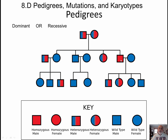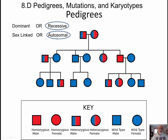So let's talk about it. Is this a dominant or recessive one? Do we all get it, or just some? This is a recessive. Is it a sex-linked one or autosomal? Looks like it could affect all sexes, so this is an autosomal. And how many generations do you see? We talked about that — we have three: grandparents, parents, and kids.